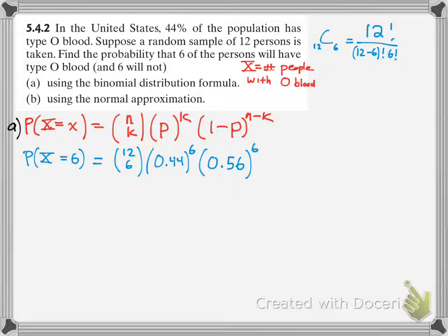And then the failure, so not getting a type O blood would be 56%, or 1 minus 0.44, raised to the 6th power as well, which is 12 minus 6. That's how we got that number there. So then, you plug that in your calculator and you get 20.68%, or 0.2068.